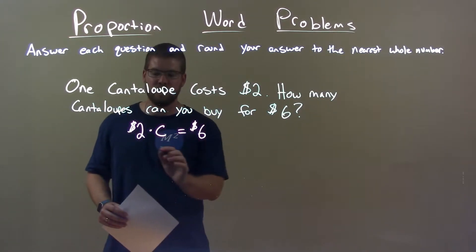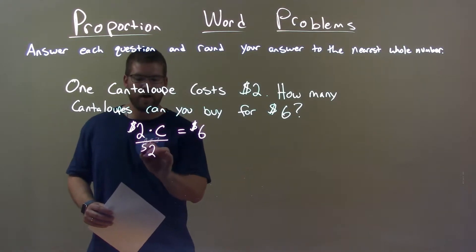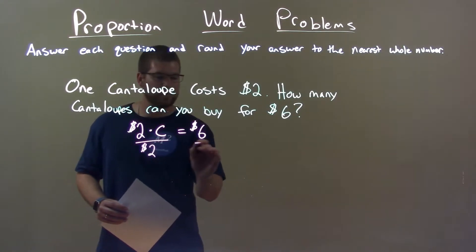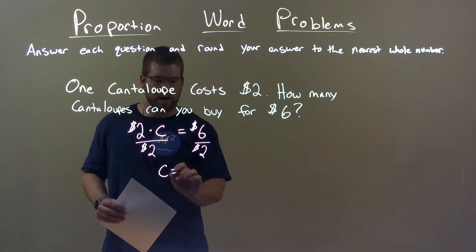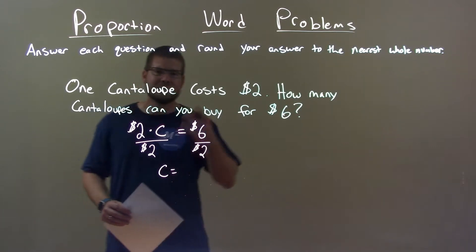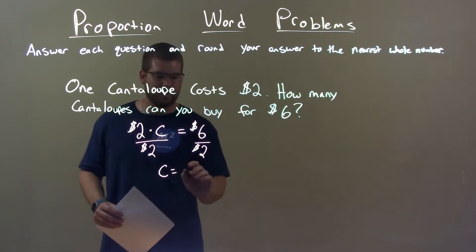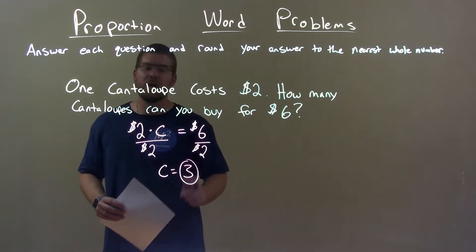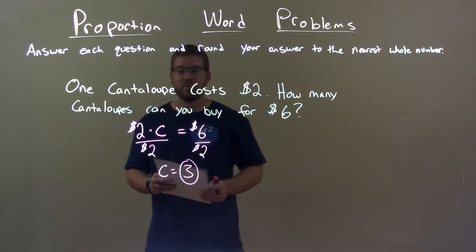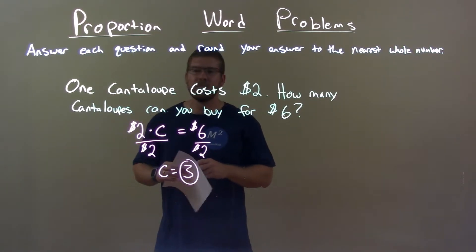Let's solve for C. I divide both sides by two dollars and I'm left with C by itself. Six dollars divided by two dollars is just the number three, so my final answer is three cantaloupes. Quick recap: we're given one cantaloupe cost two dollars.